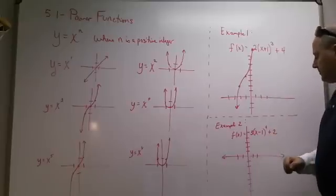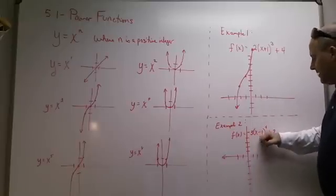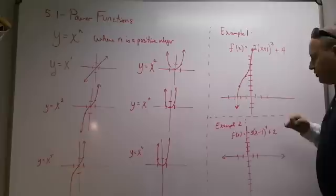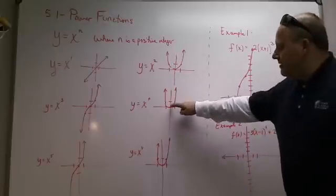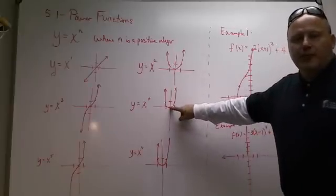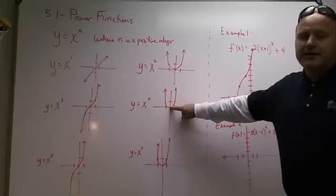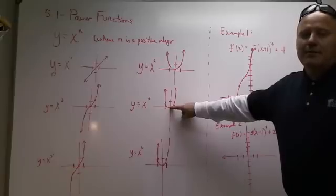So now let's look at this one. This one's negative 3 times x minus 1 to the 4th plus 2. Now on this one right here, it's going to have this shape right here. You can call it a parabola if you want. It's not really a parabola. It's what I call parabola-like.